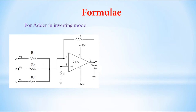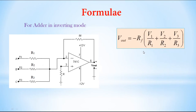Next, we look at the adder circuit or summing amplifier circuit in inverting mode. We provide 3 inputs — they can be any number — represented by V1, V2, V3, sent through resistors R1, R2, R3 to the inverting terminal 2. RF is the feedback resistor, and R is the resistance through which the non-inverting terminal is grounded. The 741C op-amp is connected to a 12-volt dual power supply. The output formula is: Vout equals minus RF times (V1/R1 + V2/R2 + V3/R3).